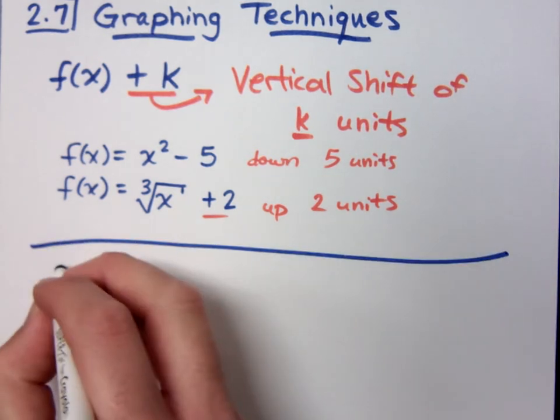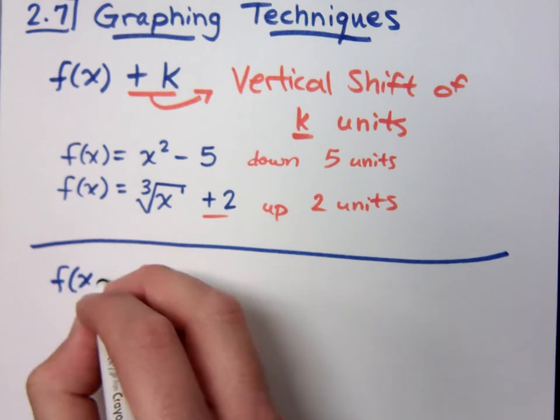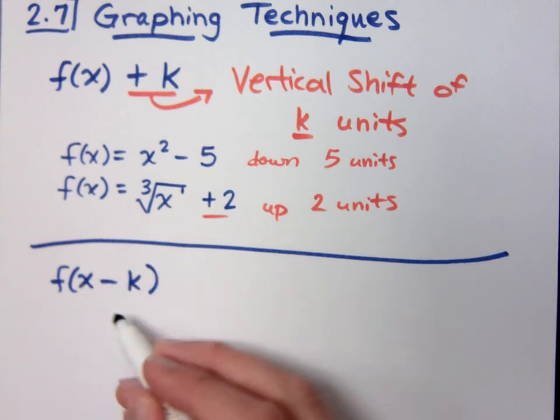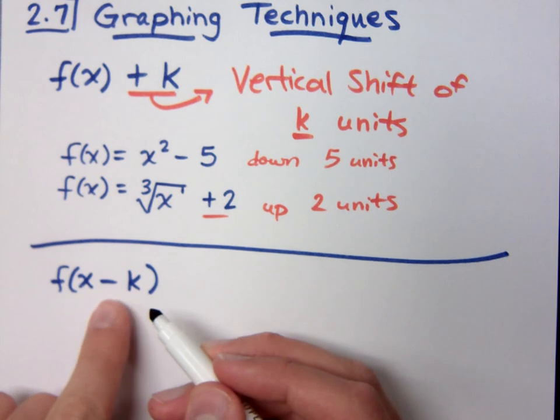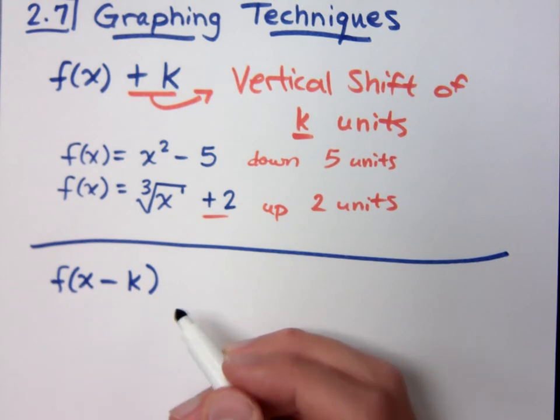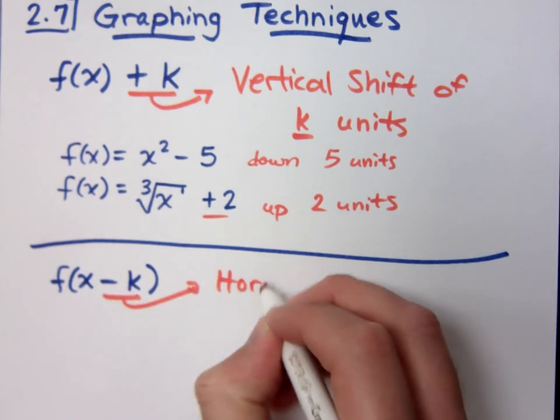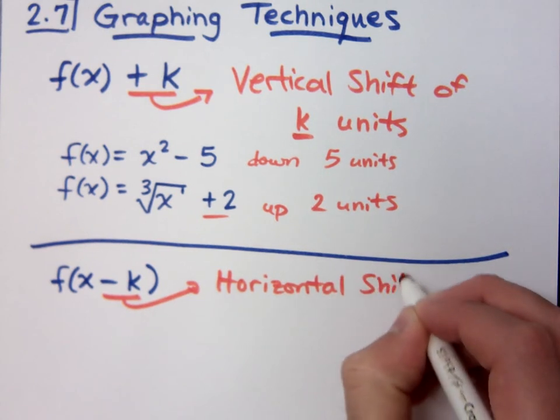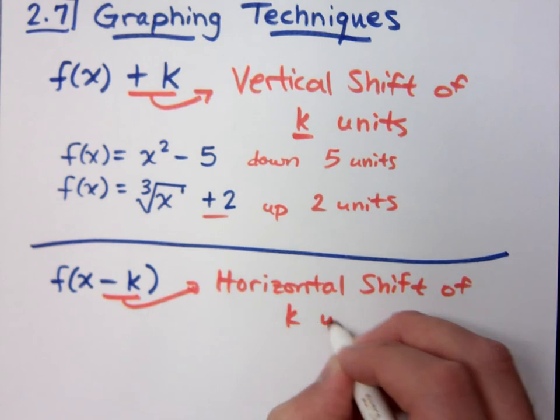The other type of translation we have is a horizontal shift. And that happens when I have an adjustment inside my function. Notice that this minus k is affecting your input. And what that means for us is that you have a horizontal shift of k units.